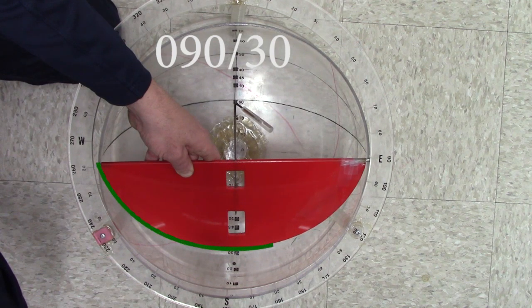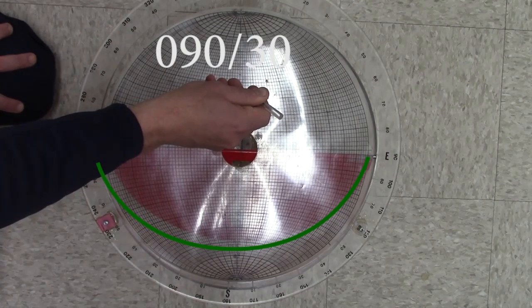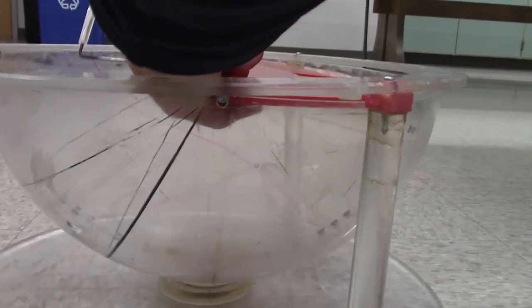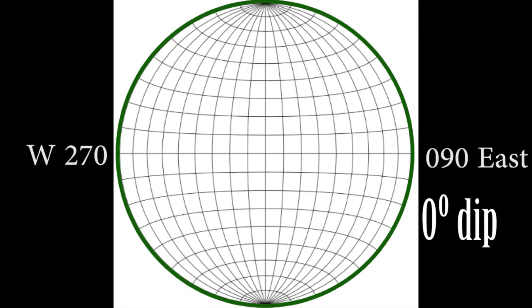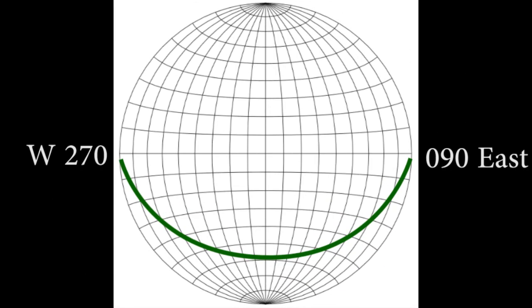Our plane makes a nice curved line across the bottom of the bowl, which is the line we would plot on a stereo net for this plane. Taking away the bowl and looking at the stereo net, the curved line needs to connect the 090 and the 270 azimuth points. A horizontal plane would intersect the outer great circle, representing 0 degrees dip. We count in from the edge 30 degrees, and this arc line represents a plane at 090/30.